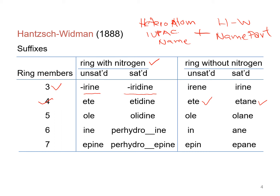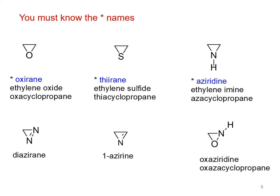Still, many heterocyclic compounds are known by their Hantzsch-Widman names. Here we can see some examples of three-membered heterocyclic compounds. For some compounds there is one name, for some there are two names, and for some there are three names. For example, one name is according to the Hantzsch-Widman system, one is the traditional trivial name, and one is according to the IUPAC system.